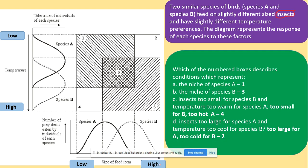The questions we've got here is to number the boxes described in the conditions which represents the niche of species A. What did we say? Species A, they like low temperatures and small insects. So the niche that we've got for them is niche one. Now we've got the niche of species for B. That was for A. What did we say about species B? Species B like big insects and high temperatures. So the niche for those will be definitely niche three. And now we've got the insects too small for species B and temperatures too...